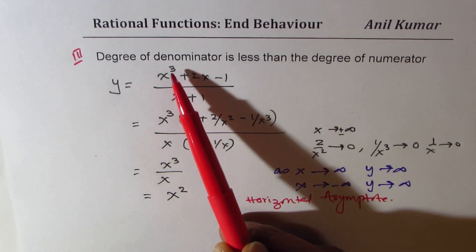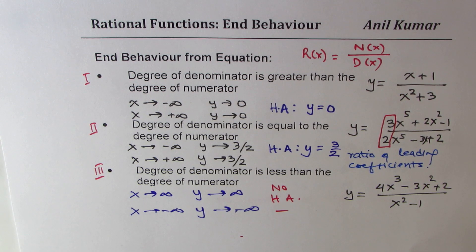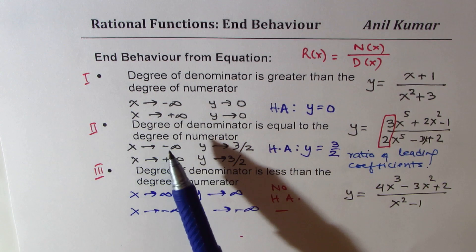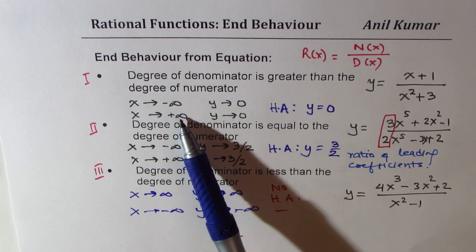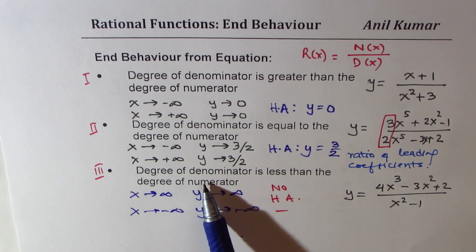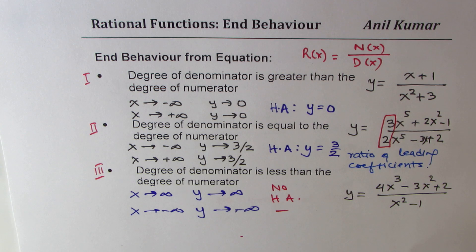If the degree of the numerator is exactly one higher than the denominator, we may get an oblique asymptote, but that will be covered in another video. The end behavior of rational functions depends on the degree of the numerator and denominator. Comparing those degrees tells us the equation of the horizontal asymptote — the value the function approaches as X becomes extremely large. If the numerator's degree is higher, the function approaches positive or negative infinity with no horizontal asymptote. Thanks for watching!